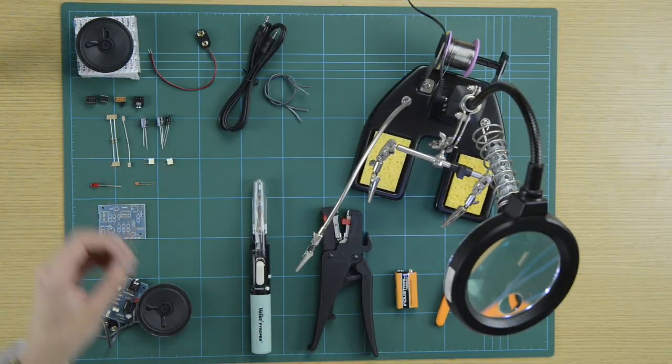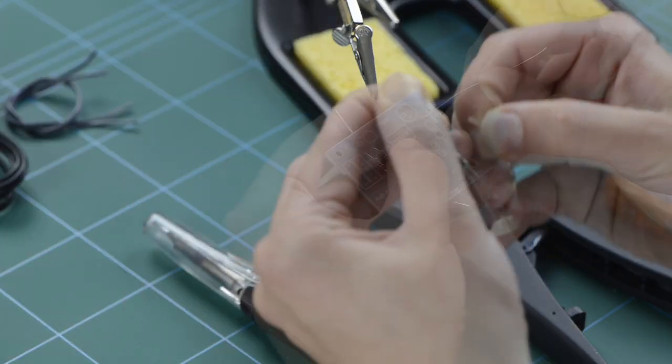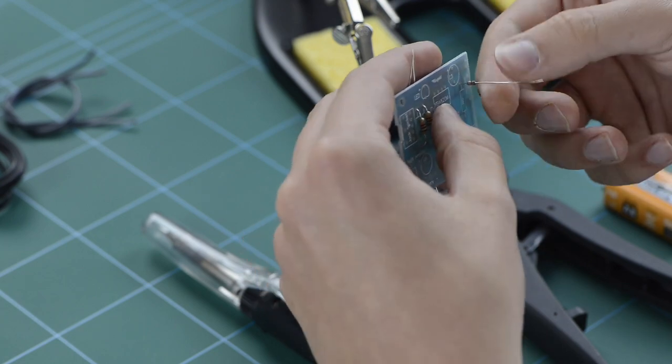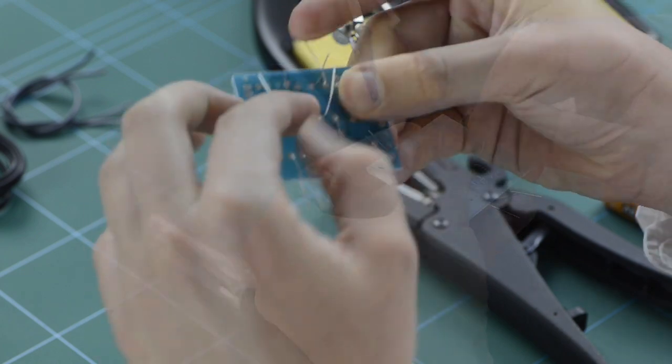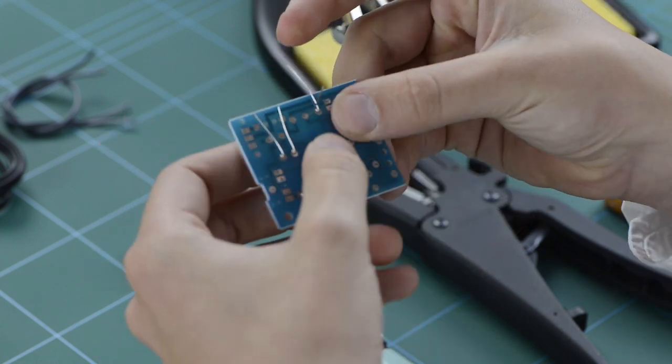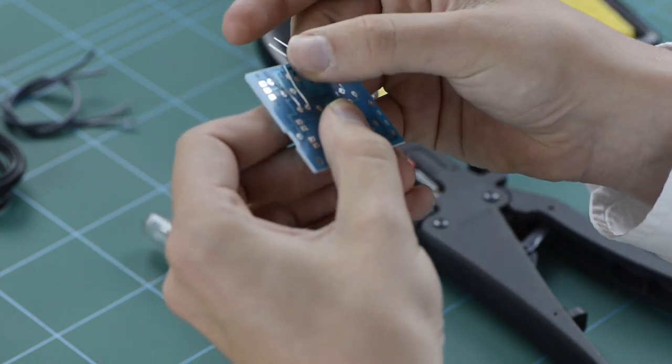First, place your carbon film resistors in the holes designated for these components on the PCB board, taking care that the correct values are placed in the correct positions according to the included guidance notes. Bend the legs of the resistors back so they sit flush with the board, preventing them from falling out when soldering.